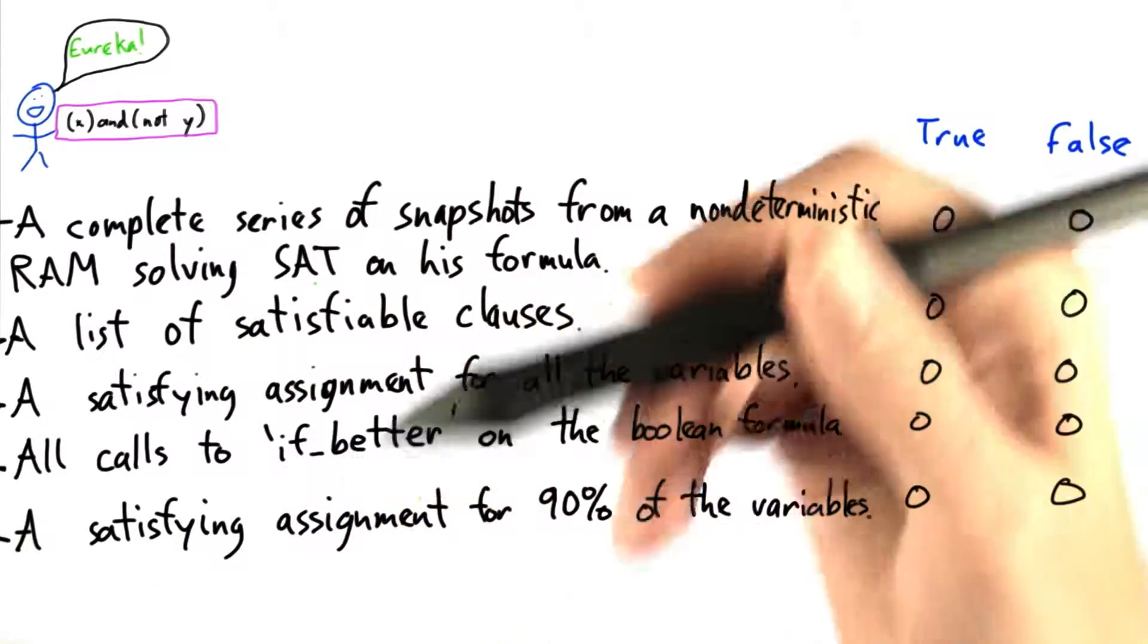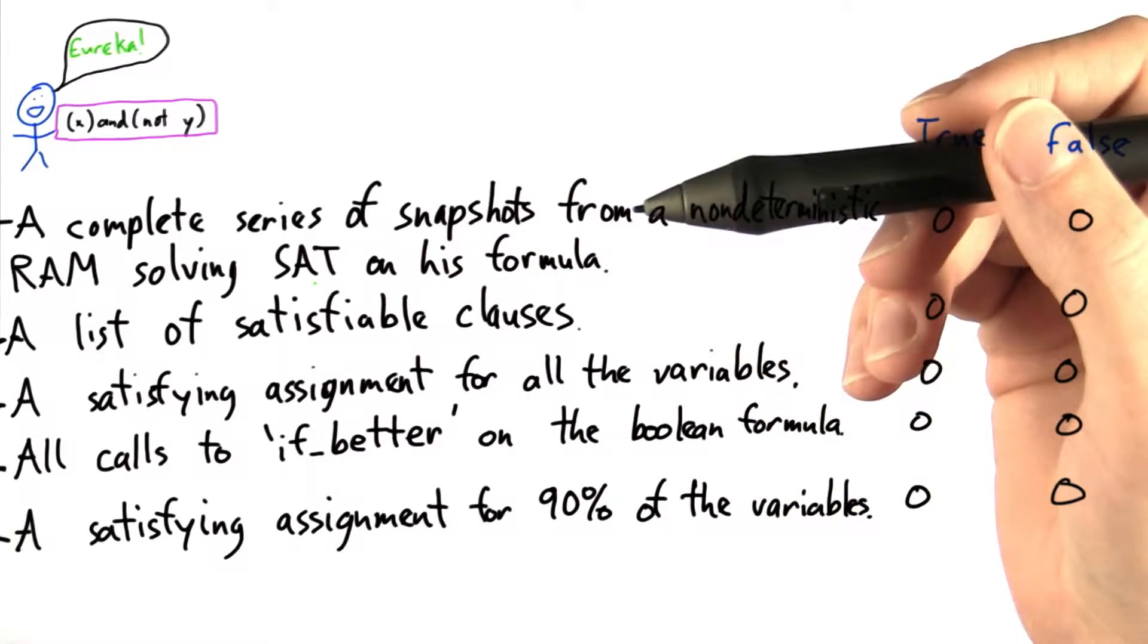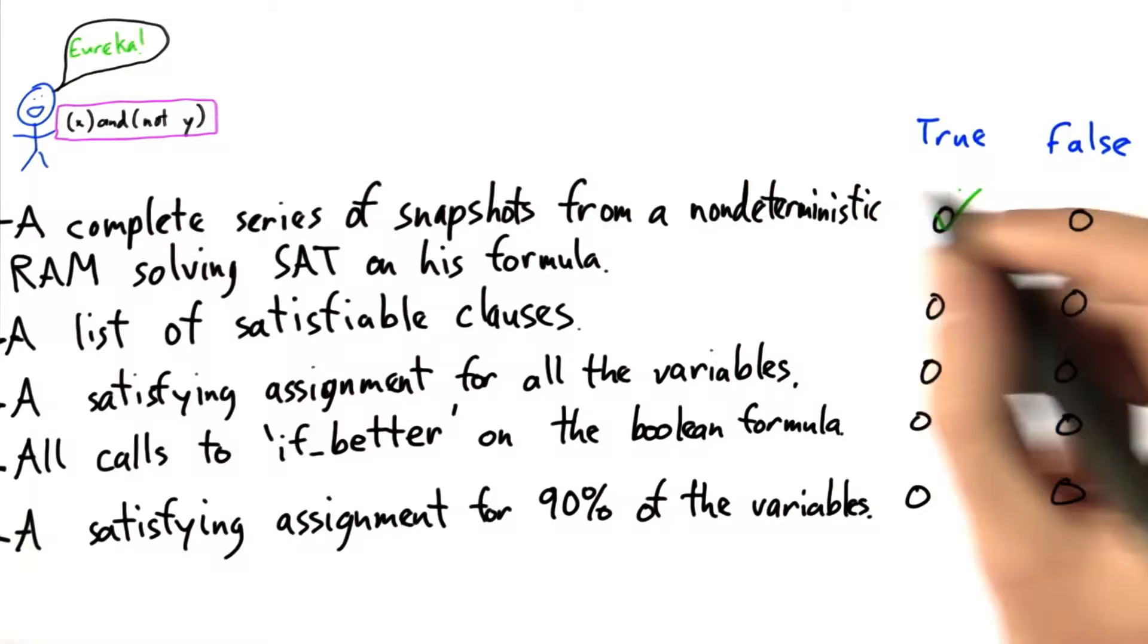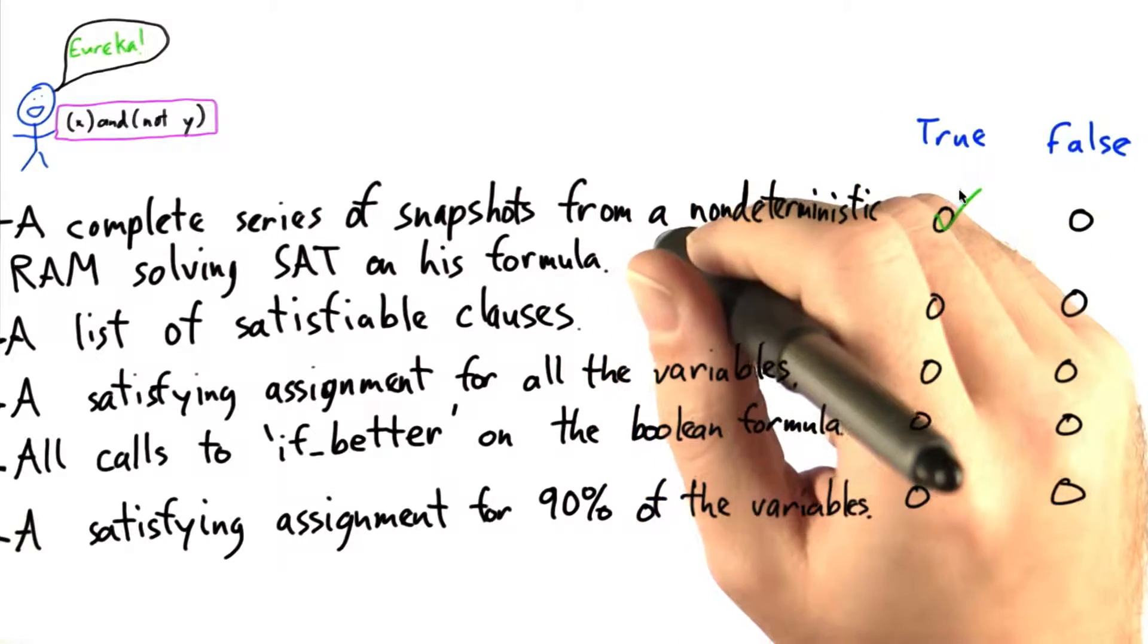So we can check those in polynomial time as well since we just have a list of these. So once we have those, we can definitely verify that his formula is satisfiable.